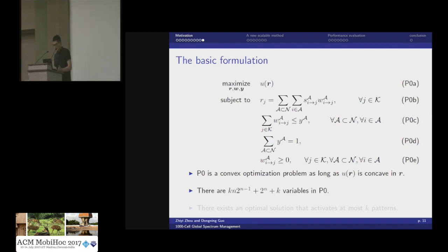However, if we count the total number of variables in this problem, it increases exponentially in the number of APs — where K is the number of users and N is the number of APs. Therefore, this problem becomes computationally infeasible for even a medium-scale network, say with 100 APs. We aim to get a scalable solution with performance guarantee.